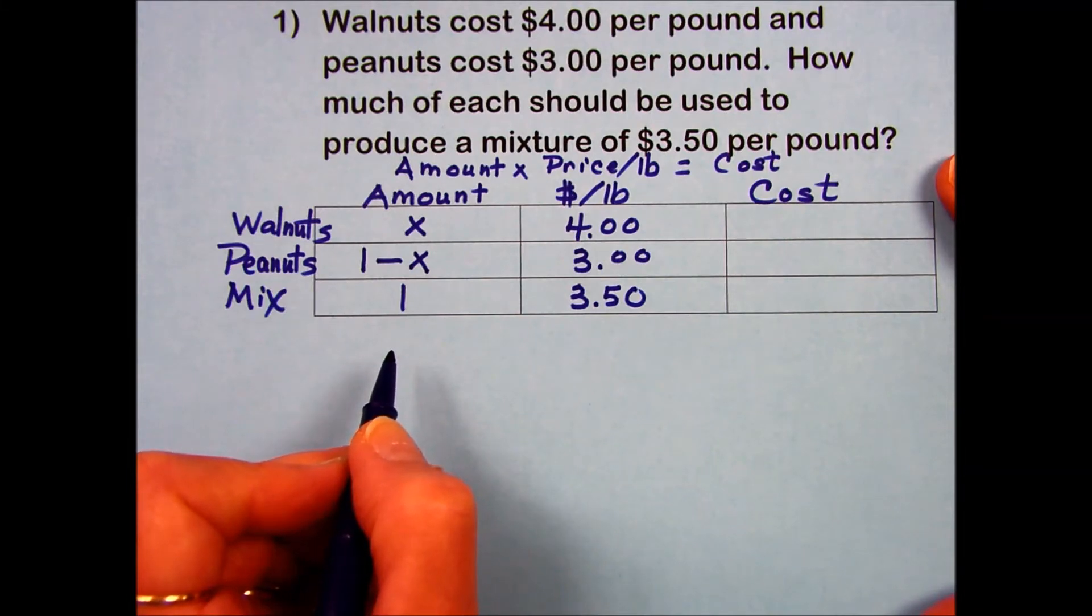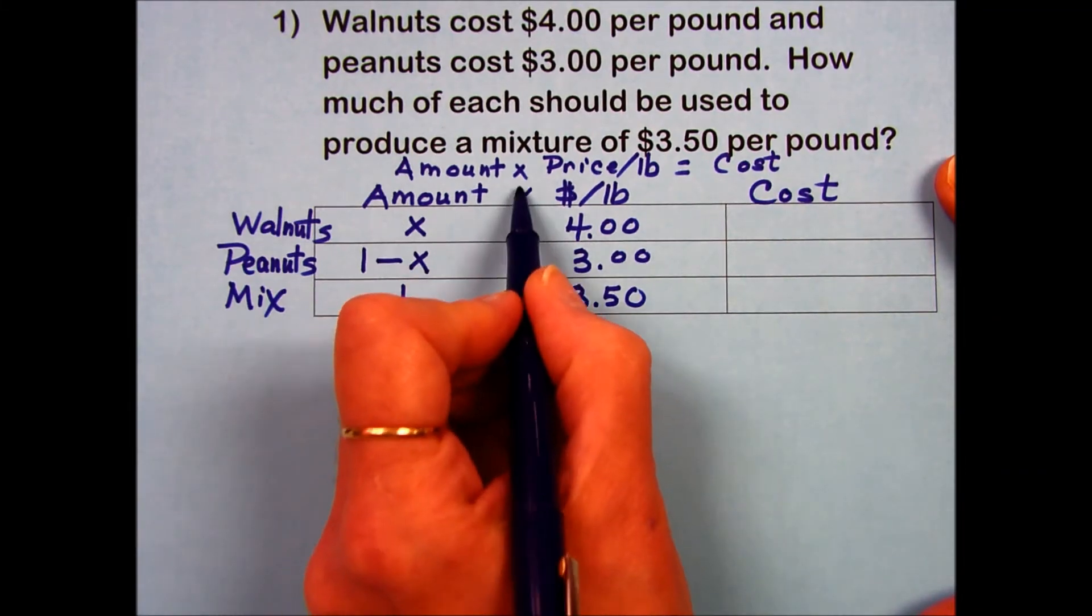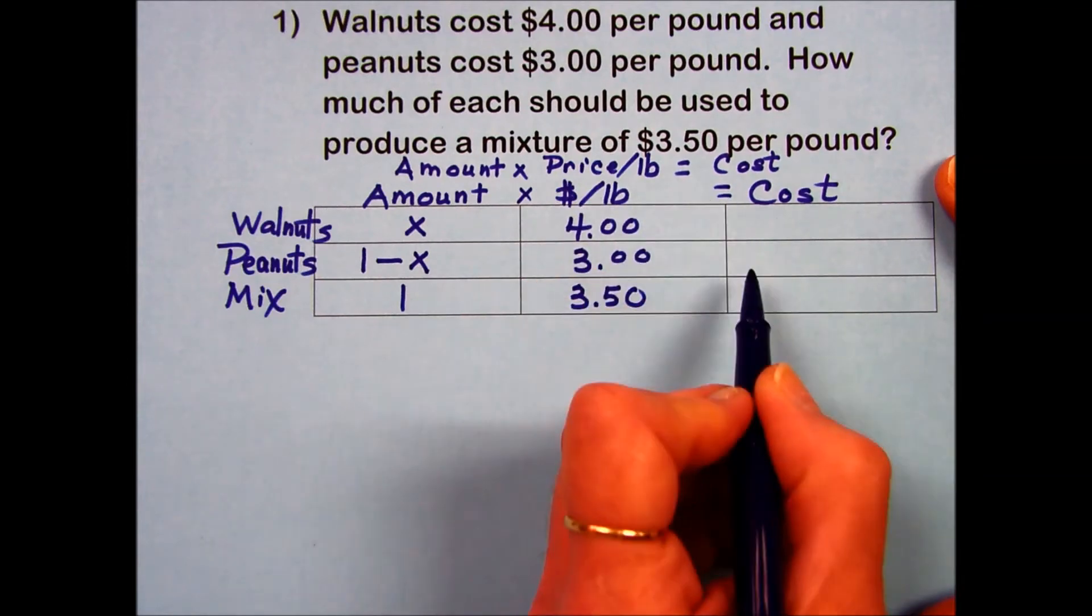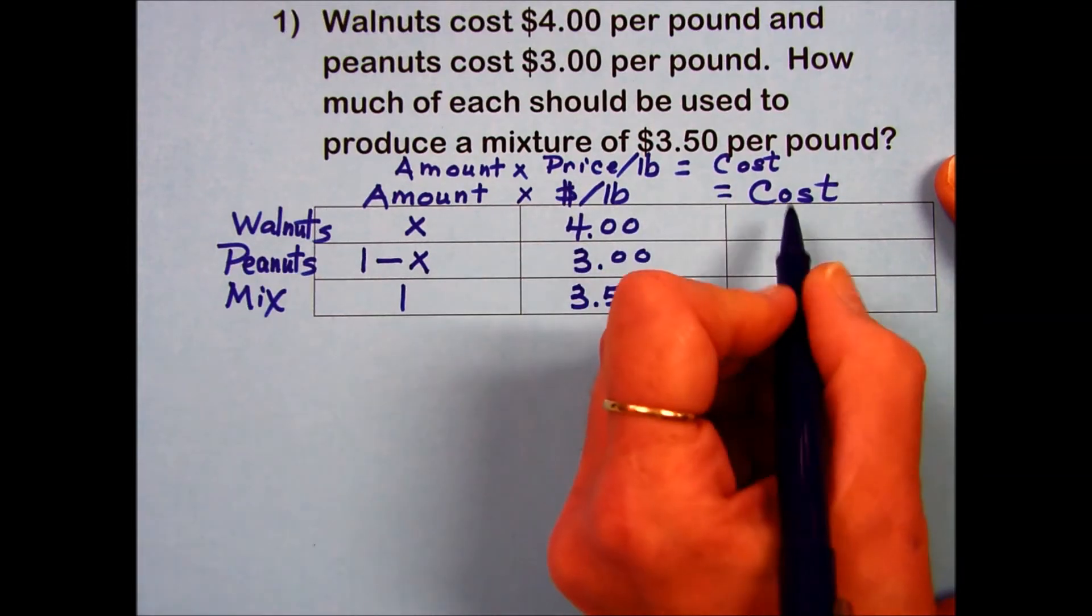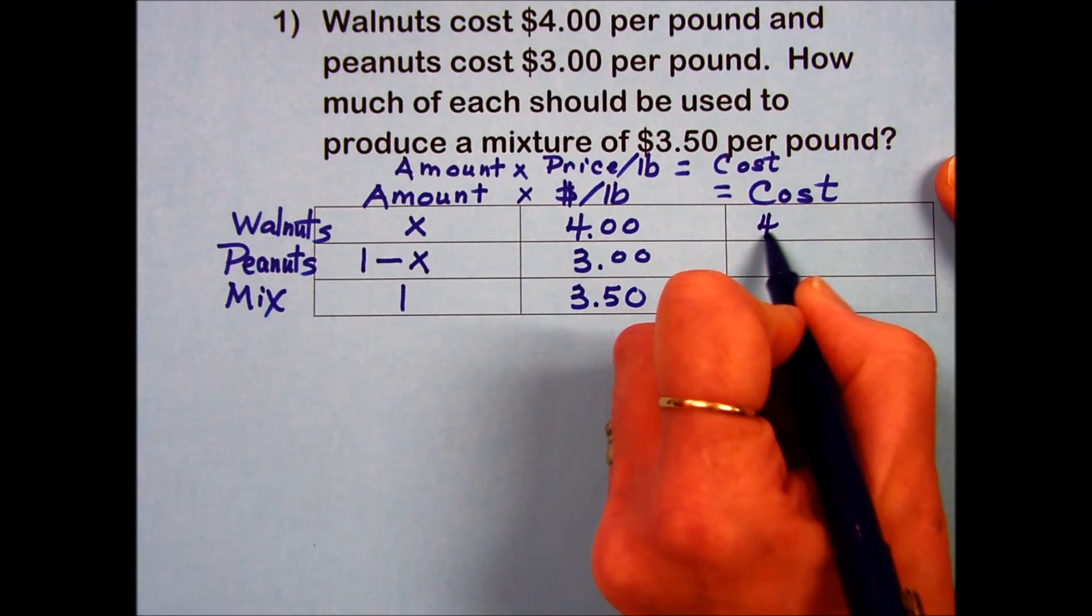Filling out the third column, I'm going to use the formula. Amount times the price per pound gives us cost, resulting in $4 times x.